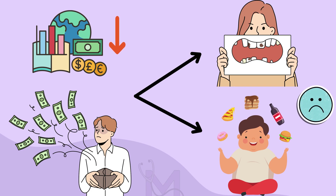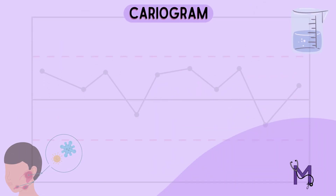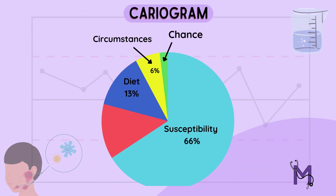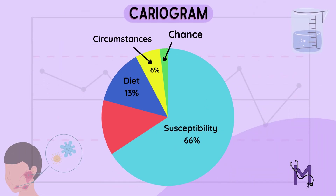Coming to the cariogram graph, as you can see here, it's a pie chart divided into 5 sectors. This system consists of using 5 colors, with green being the lowest risk and red being the highest risk.